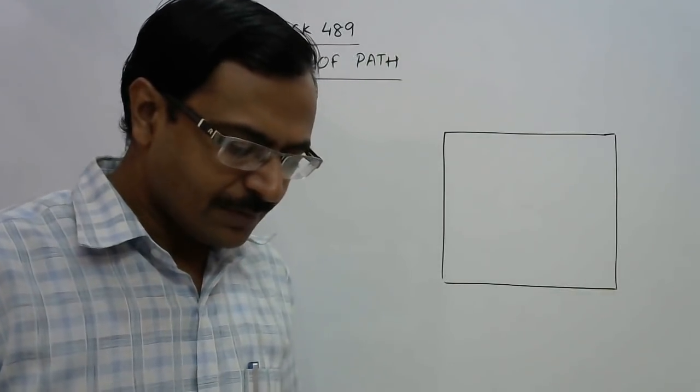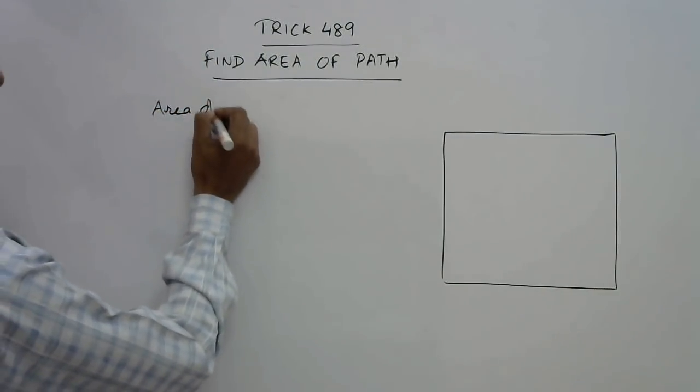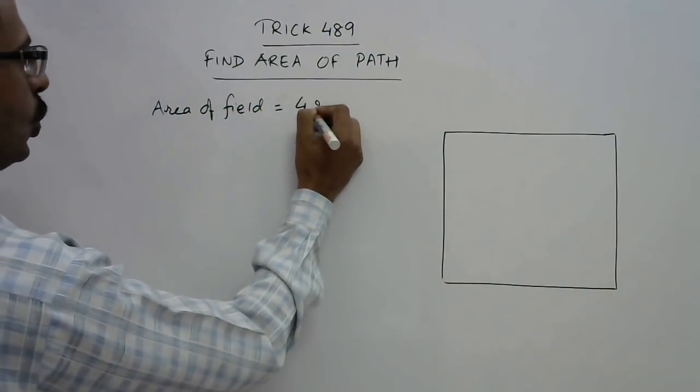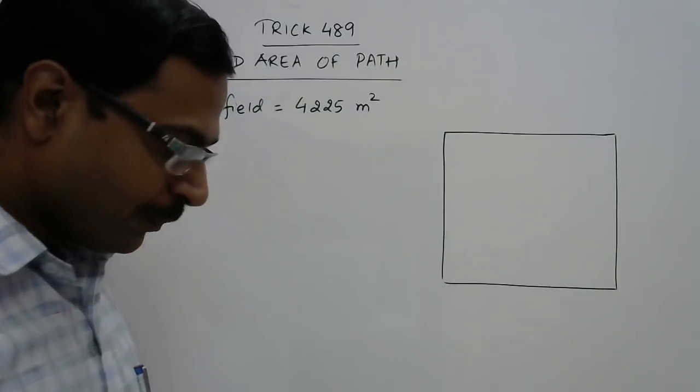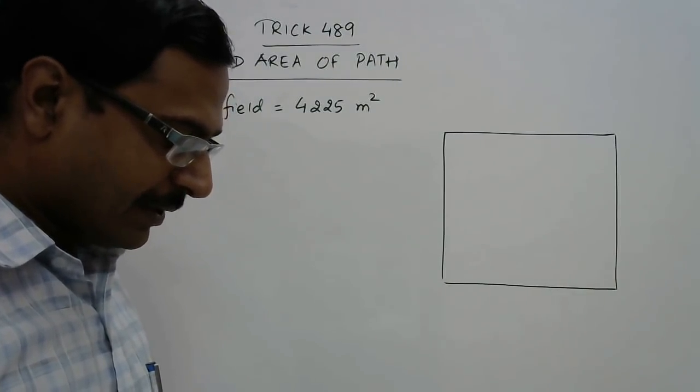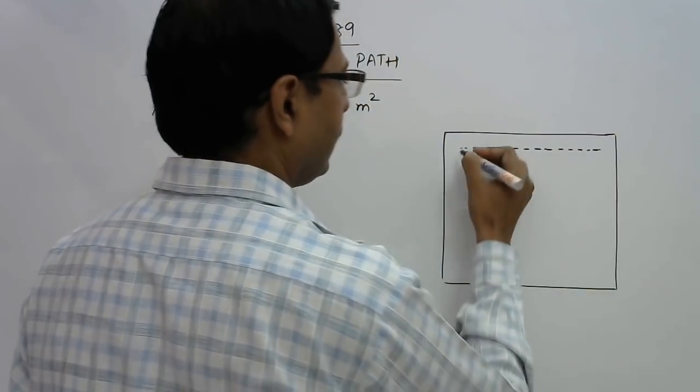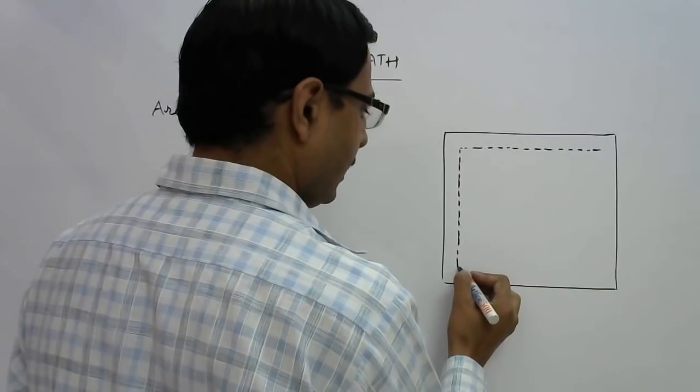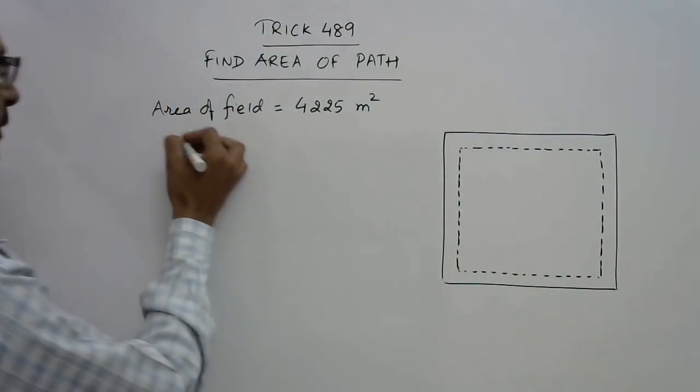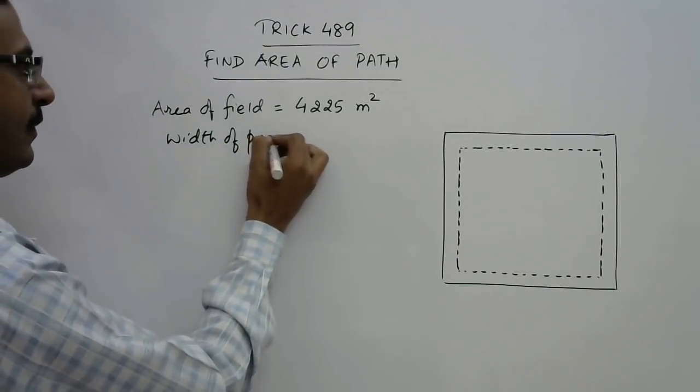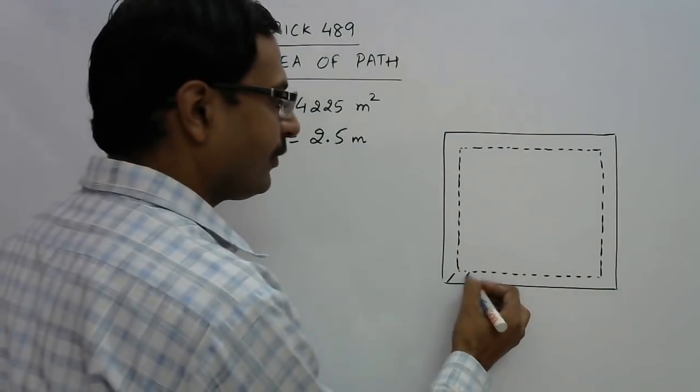Now this is a basic question. This is a square field and the area of the field is given to you, it is 4225 meter square. The area of this entire square field is given to you, and now we are given that there is a path inside the periphery, like this. It is made inside the boundary like this, and the width of this path is given as 2.5 meters. So we need to find out the area of this path.